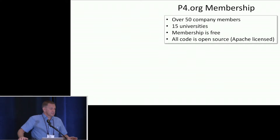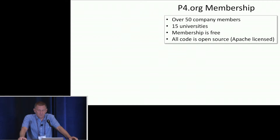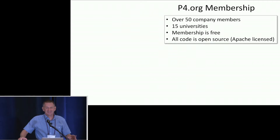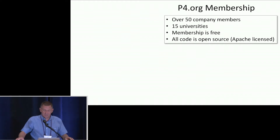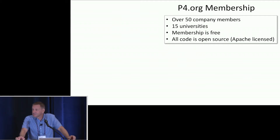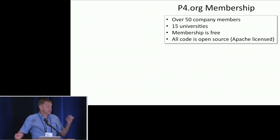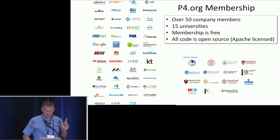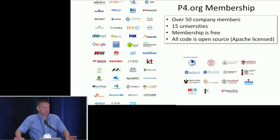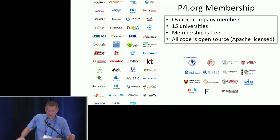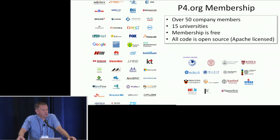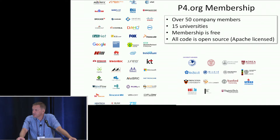P4 is a free organization — membership is free, and it's set up as a nonprofit. All of the costs related to P4.org — paying for a website, domain name, legal costs, things like that — are actually paid for by this event. So your registration fees pay for today's event, plus those other aspects of P4.org, plus the generous contributions from our sponsors. It's a very lean, small organization; everybody's volunteers. All the code is Apache 2.0 licensed, so it's a very permissive license.